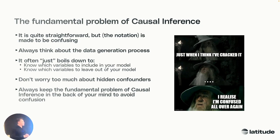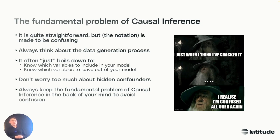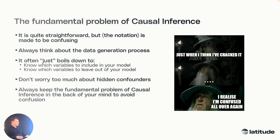There's one big fundamental problem with causal inference. It's actually quite straightforward — it can be made to seem very confusing, but it basically always boils down to: think about the data generation process. How did the data come to be? And then, what variables do you have to include or exclude from your data? That is basically what it is. It is quite hard to find which variables to actually implement or shouldn't implement. Don't worry too much about hidden confounders — start thinking about the fundamental problem.